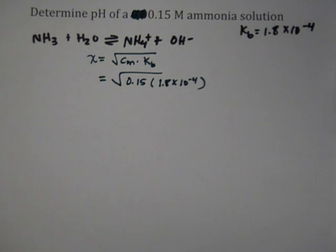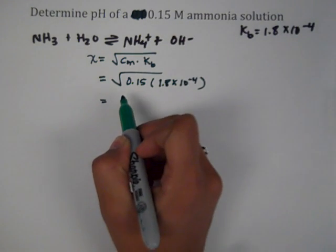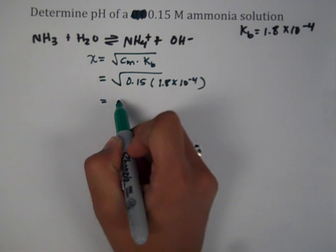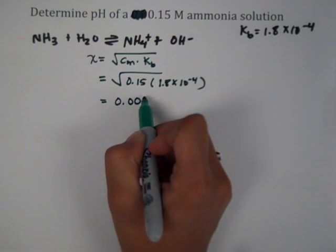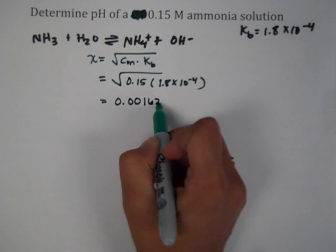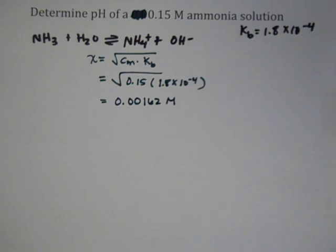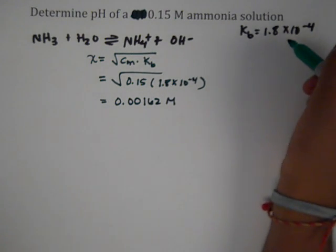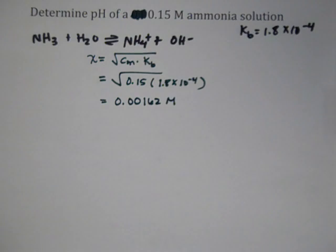When we solve for that, our X value is roughly 0.00162 M. The Kb is 1.8 x 10^-4, so depending on which Kb value you use, your answer might be slightly different, but it should be approximately this value.